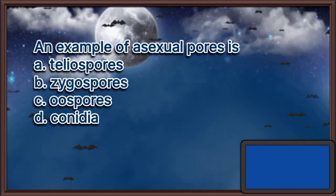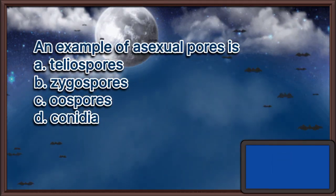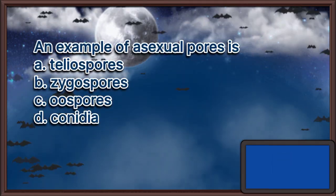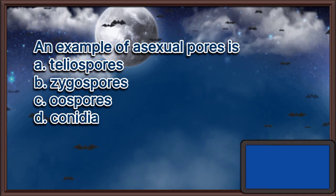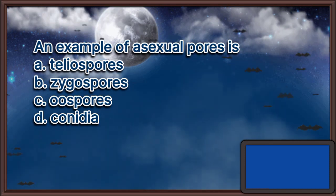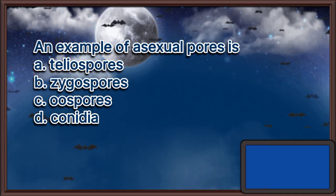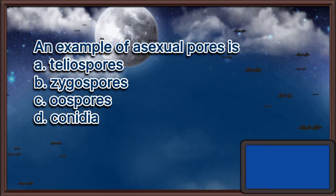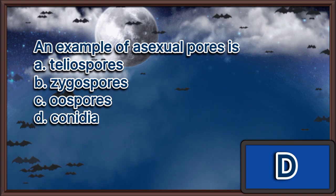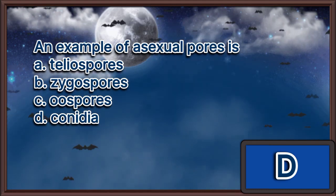An example of asexual spores is. A. Teliospores. B. Zygospores. C. Oospores. D. Conidia. The answer is letter D.